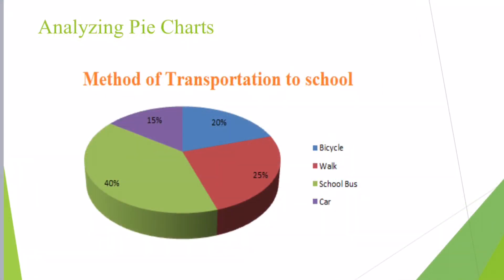Analyzing pie charts follows the same strategy as the previous one. Again, we start with the title, then study the variables, then compare and contrast them, and finally come up with a conclusion. This pie chart shows the method of transportation to school used by students. There are four different variables: bicycle, walking, school bus, and car. These are the means of transportation, calculated in percentages. When we compare them, the highest percentage goes to the school bus at about 40%, and the lowest goes to the car, where 15% of students use that means of transportation.